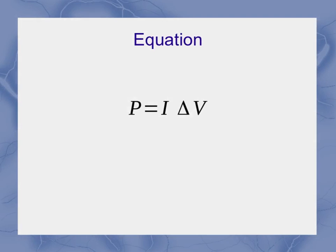So again, power is my P, current is my I, and delta V is my voltage. So this is our standard equation for power in an electrical circuit.